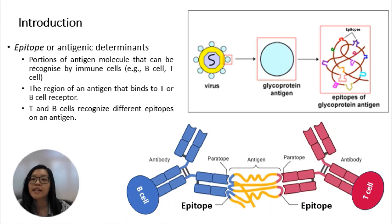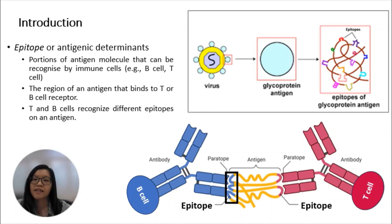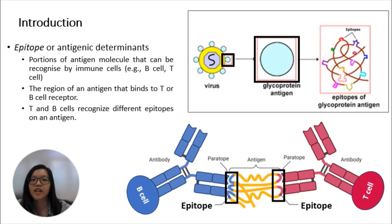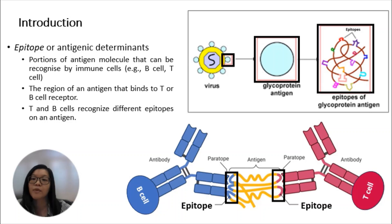Epitopes, or antigenic determinants, are the regions of an antigen that bind to a B or T cell receptor on the antibody molecule. Since an epitope is the part of the antigen that binds to the B or T cell antigen receptor, it determines the antigenicity of an antigen. T and B cells recognize different epitopes, and each different protein or glycoprotein of the virus constitutes a different antigen containing a number of different epitopes.